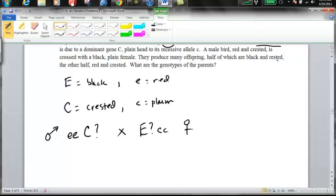half are black and crested. This says rested, but it should say crested. So, you can see there, half are black and crested, the other half are red and crested. What that means is we've got a half and half split between black and red, but 100% of their kids are crested. From this information, we should be able to infer what the genotypes of the parents are.